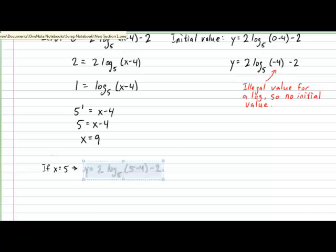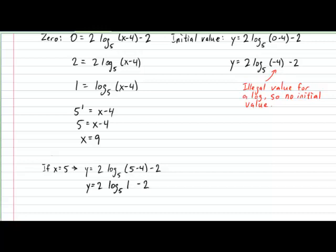So, plugging in the 5 into the x will produce the following. When we continue simplifying, we get y equals 2 times the log in base 5 of 1, subtract 2. And, as everyone knows, log in base 5 of 1 is equal to 0. Why? Well, remember the definition of a log: 5 exponent to 0 gives us back the 1. And finally, simplifying for y, we get that y equals negative 2. So, this gives us a point on the graph located at 5 and negative 2.